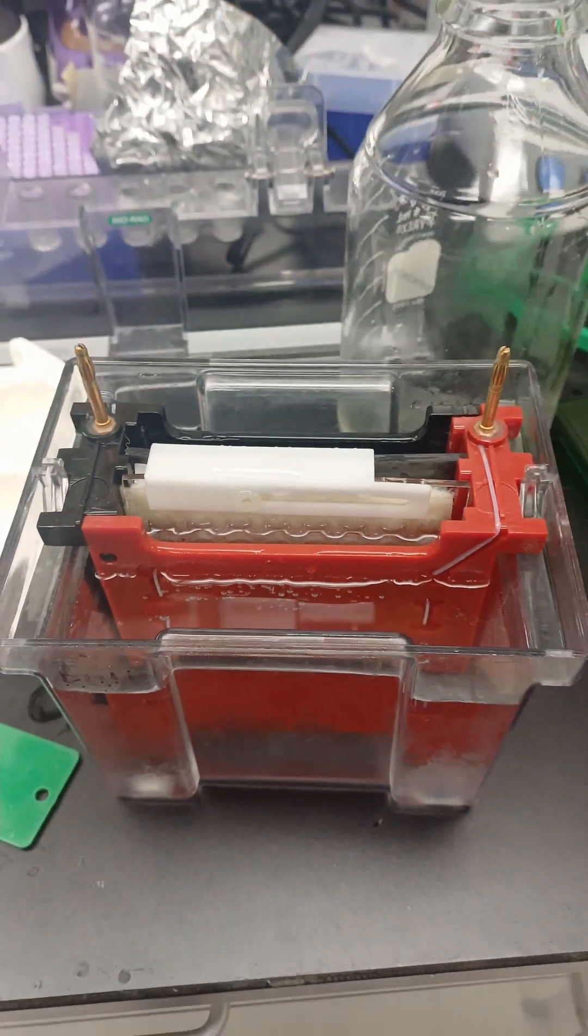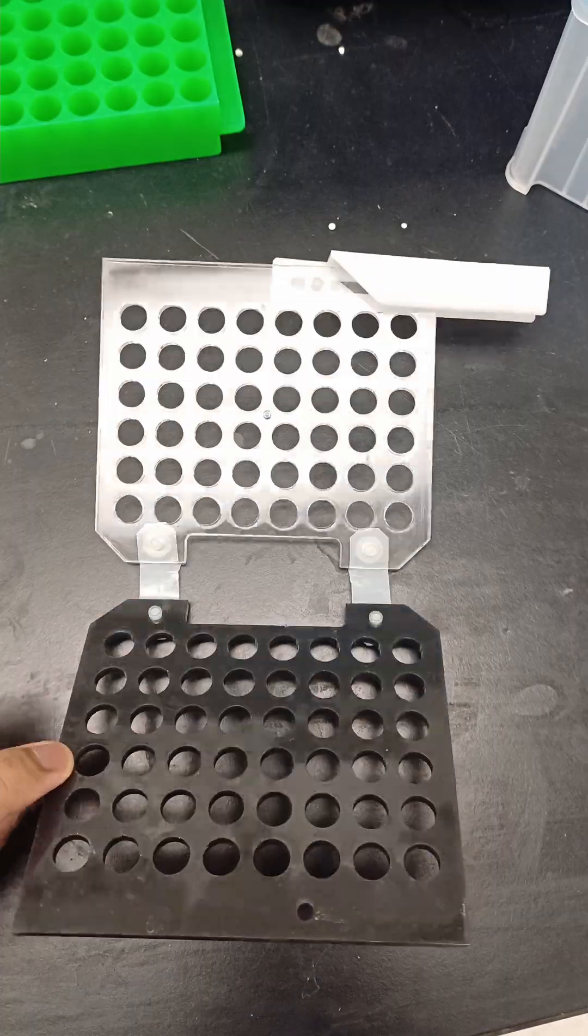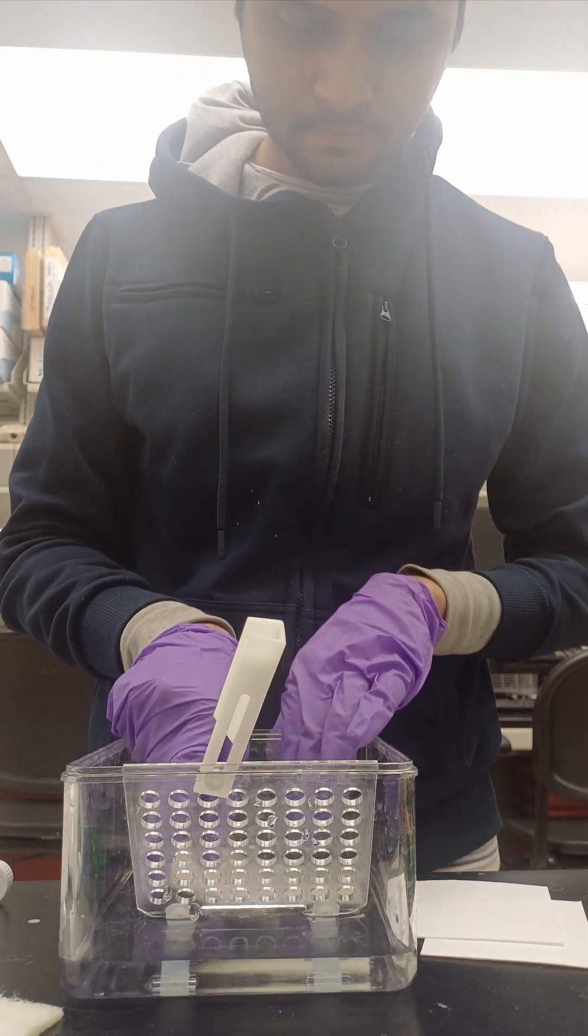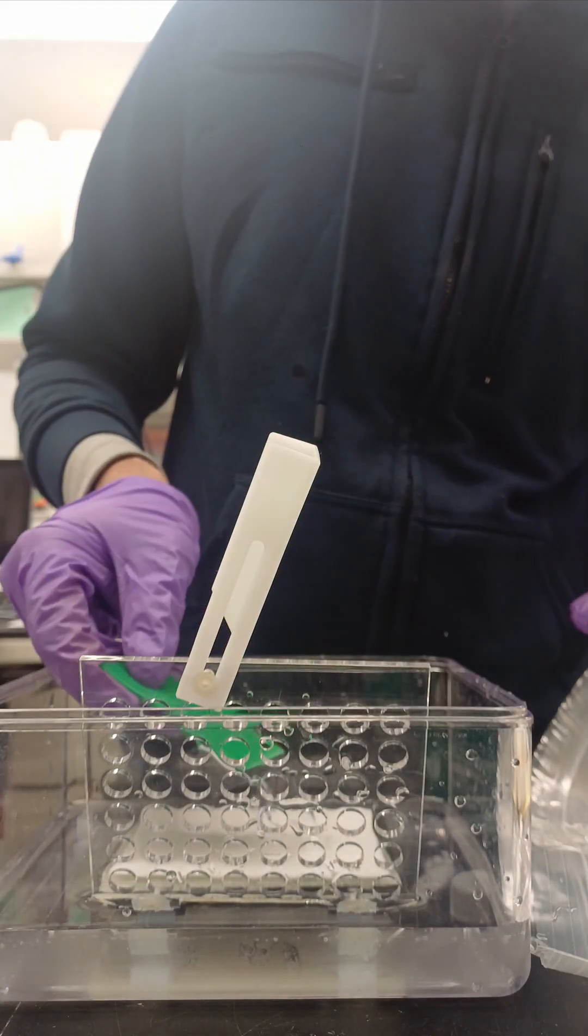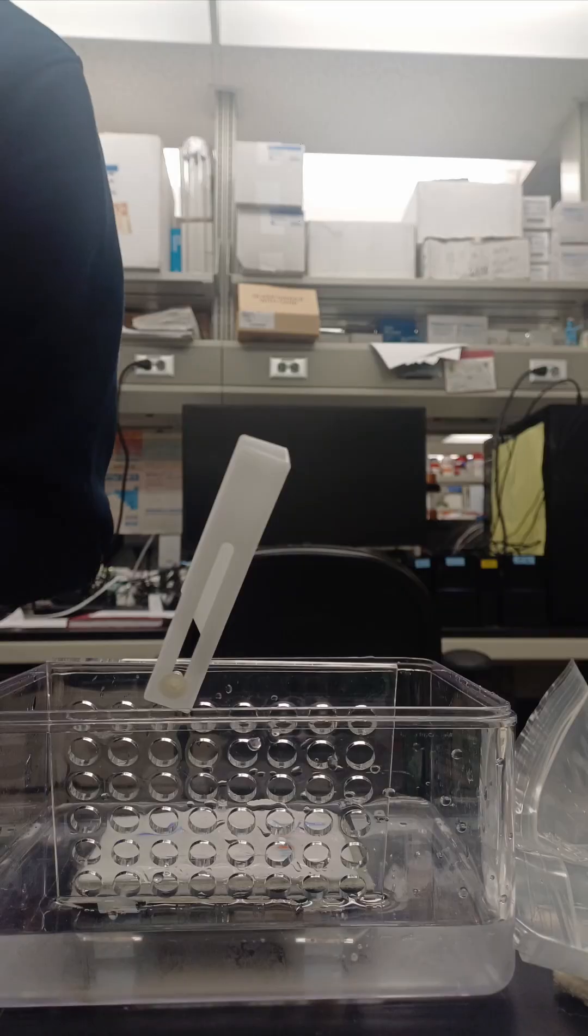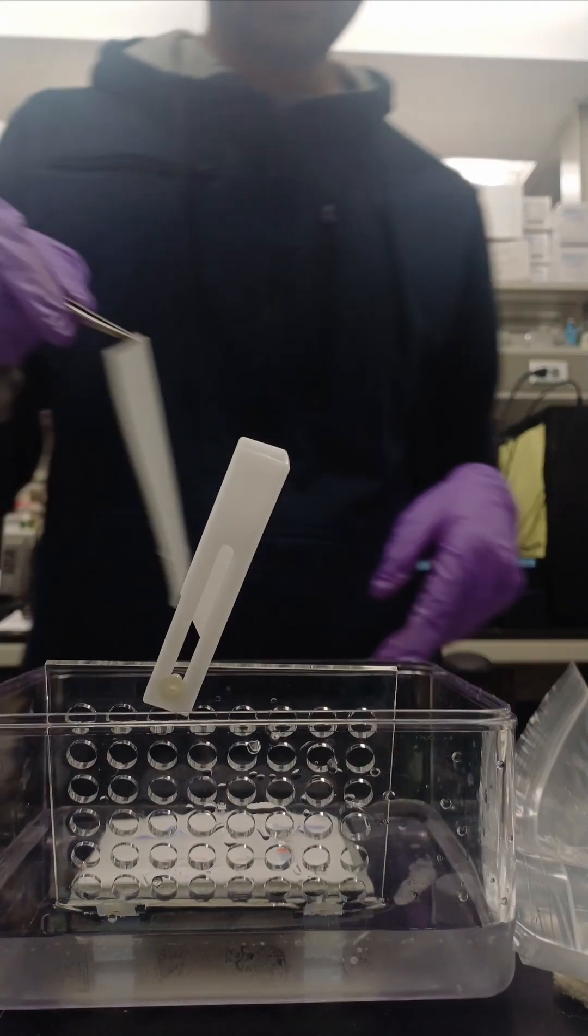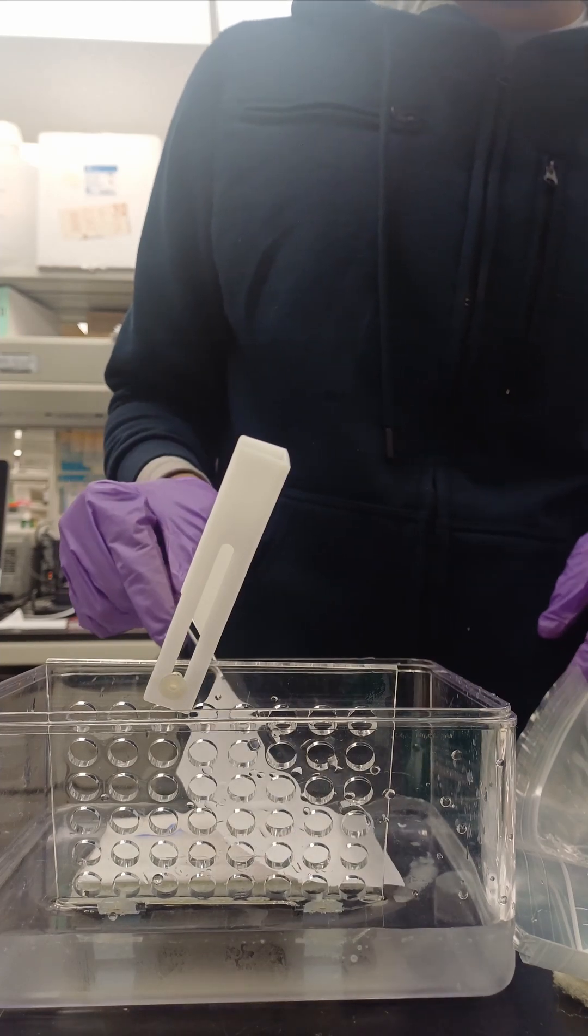I am doing a wet transfer so I start by layering the cassette from the black side with foam and then the filter paper. Now be very gentle by placing the gel because it's fragile and can tear easily. Then place either the nitrocellulose or PVDF membrane covering the gel completely.